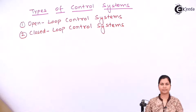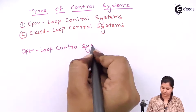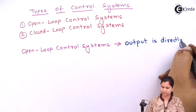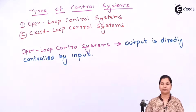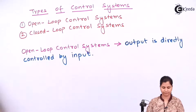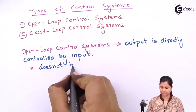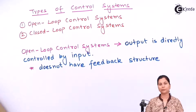In open loop control systems, the output is directly controlled by the input. Any system which does not have a feedback structure will be an open loop control system. That is why open loop control systems are also known as non-feedback systems.